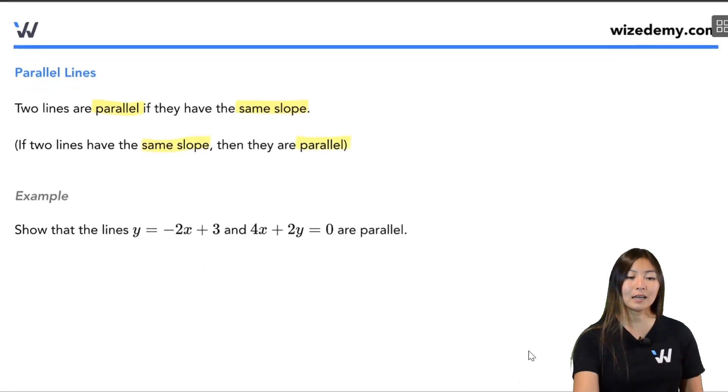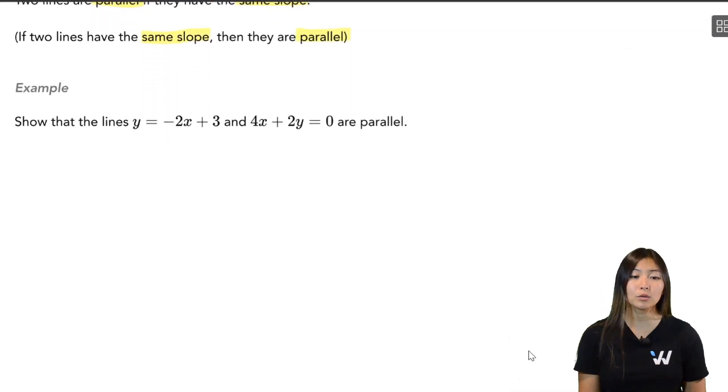So let's take a look at an example here. We want to show that this line y = -2x + 3 and the line 4x + 2y = 0 are parallel. So let's first find the slopes of both lines. This first line is already in our y = mx + b format, in our slope y-intercept form. So that means that the slope is just going to be the number in front of x, which is -2.